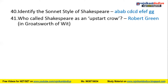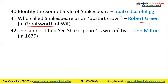Robert Greene called Shakespeare an 'upstart crow' in his pamphlet Groatsworth of Wit. The sonnet titled On Shakespeare was written by John Milton and published in 1630.